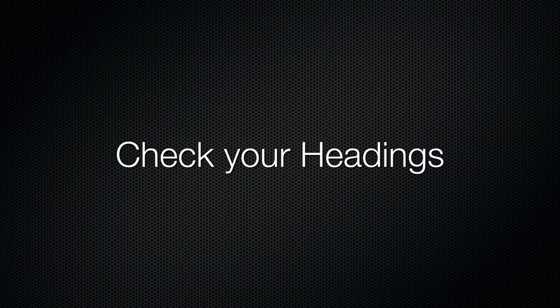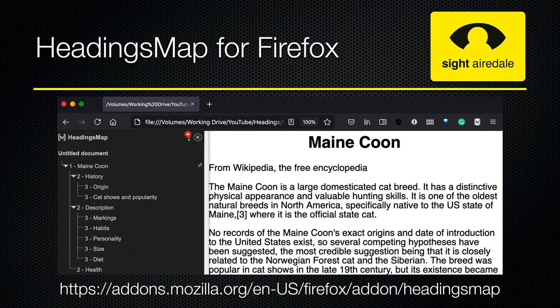So how can you check that the headings on your website are correct? One option is to use the HeadingsMap plugin for Firefox, which is free. It shows a nice little tree of your heading structure, and if there are any errors it will show them in red, so you can immediately see where something is wrong with your headings.